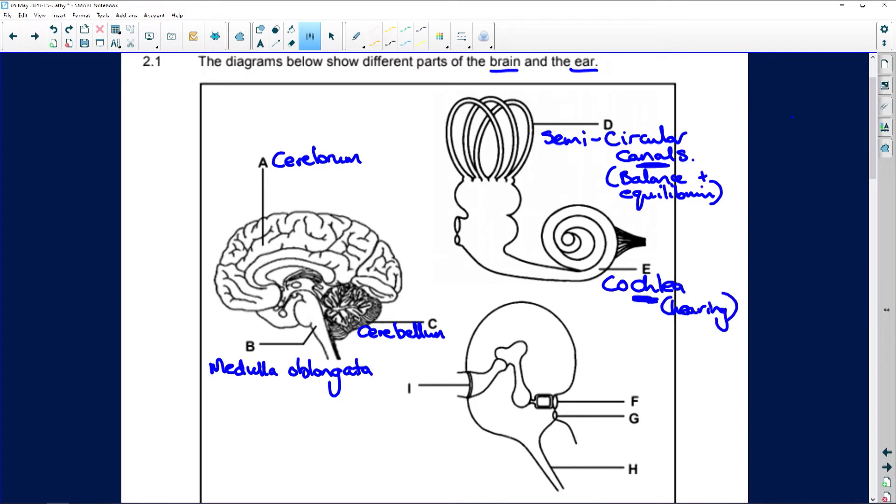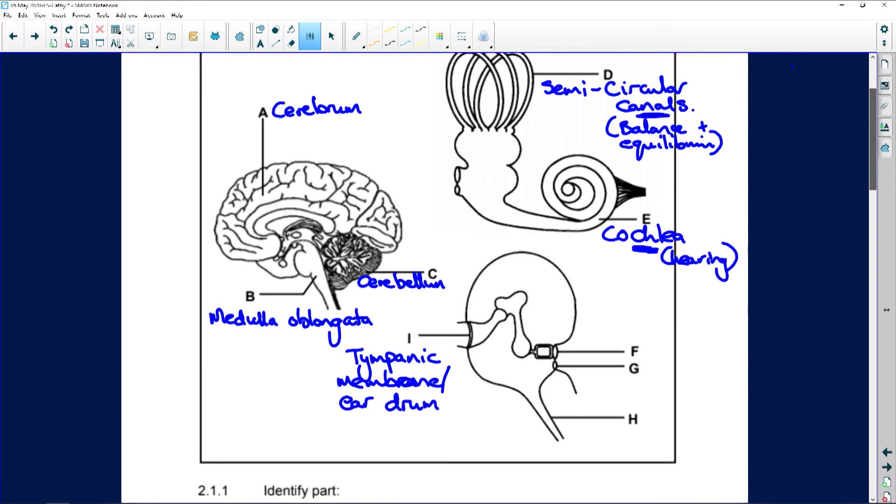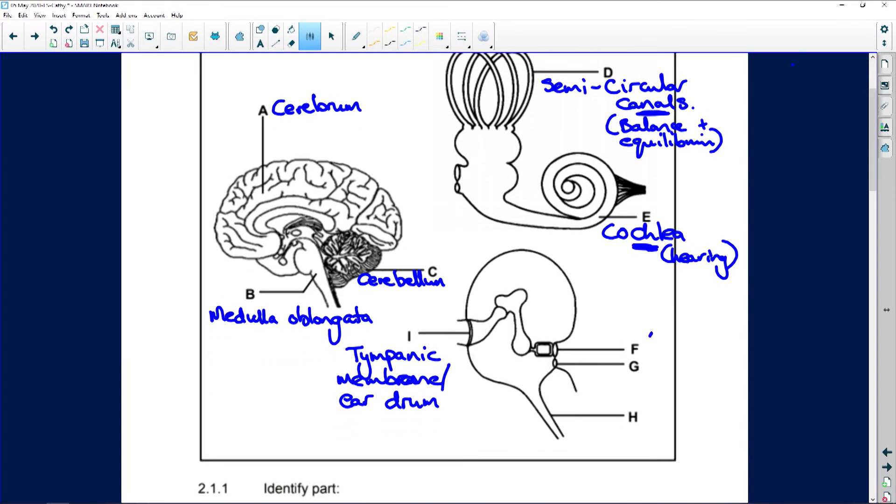I is going to be your tympanic membrane. And another name for the tympanic membrane is the eardrum. So you can call it the eardrum or the tympanic membrane. Then F is the oval window. And O, you can see the shape. And then G is the round window.